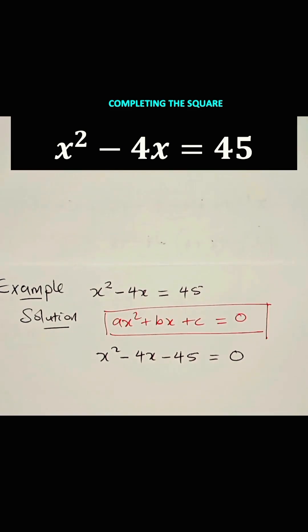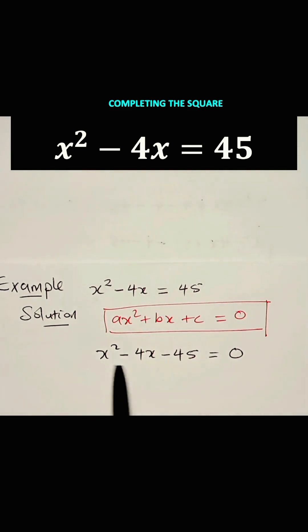Now, at this stage, you must make sure that the coefficient of X squared is 1, and it is 1 in this regard. Now, we are going to divide the coefficient of X by 2 and square it. And the coefficient of X is minus 4.